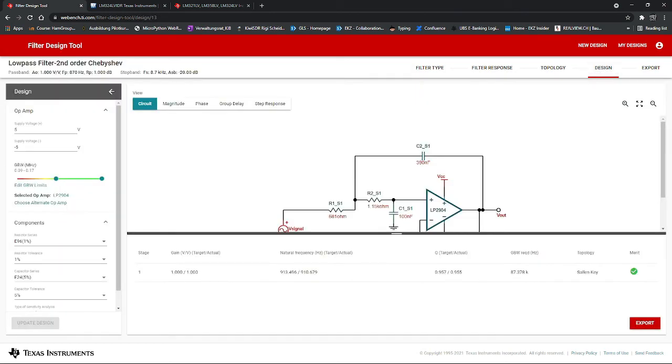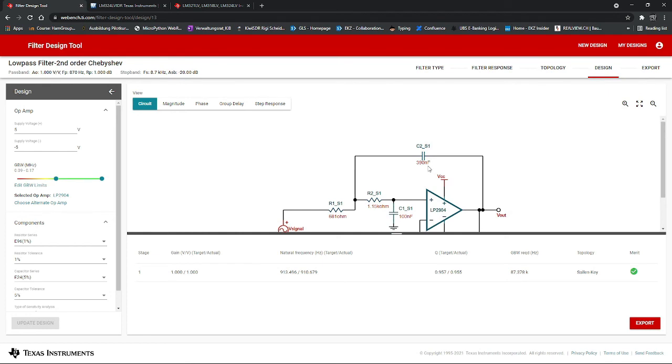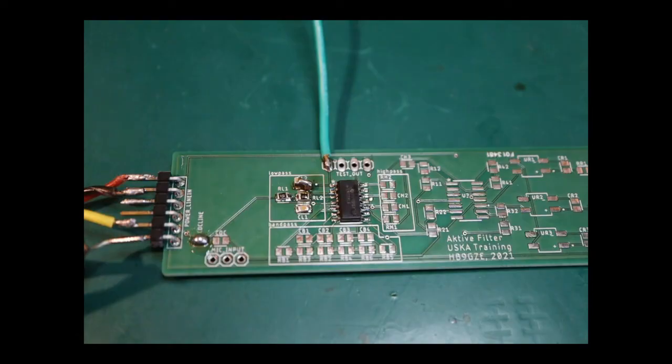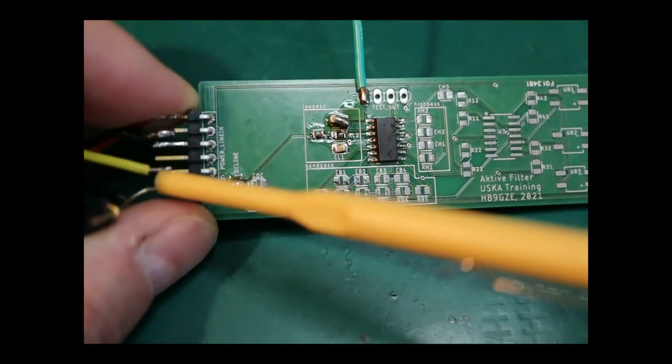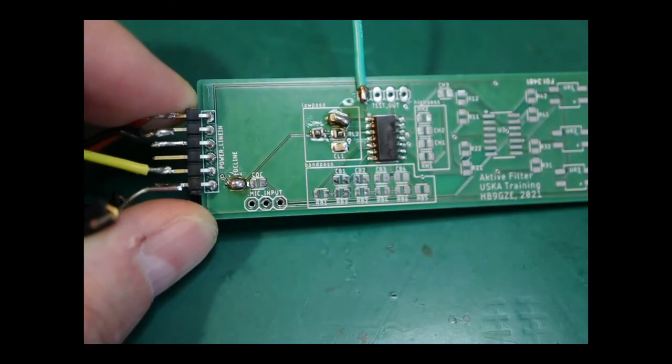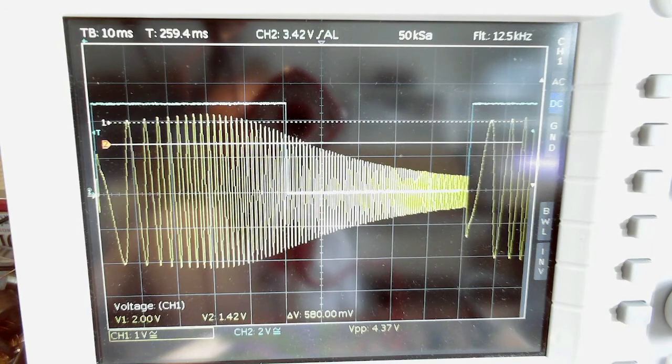I had some troubles with these 390 nanofarad capacitors because I don't have them here at home, so I constructed it with 470 nanofarad in series with 2.2 microfarad, which should give around 390 nanofarad. On this active filter, yellow is the input, I power it with plus minus 5 volts, and green is the output. Let's take a look at the scope.